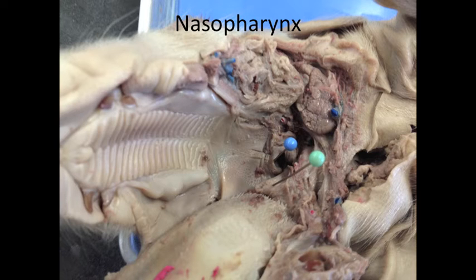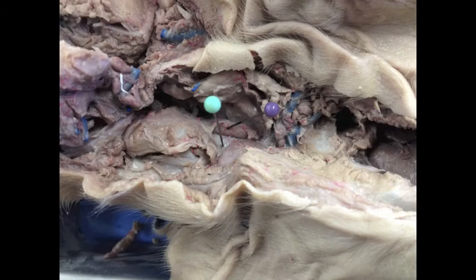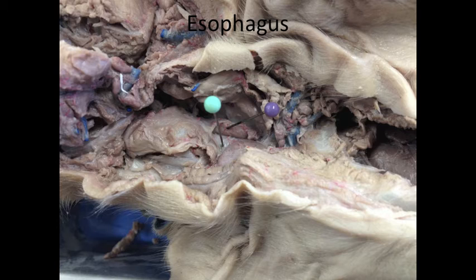That's shown here — at least the opening leading into the nasopharynx — with the blue pin. The tract then continues down the neck through the esophagus, shown here with the purple pin. The esophagus lies just behind the windpipe, or the trachea, shown with the green pin.